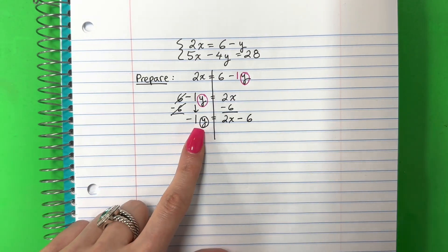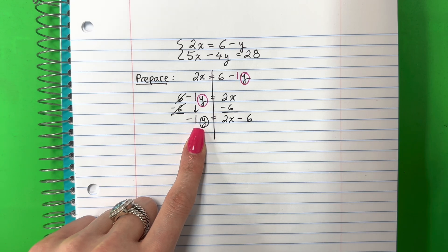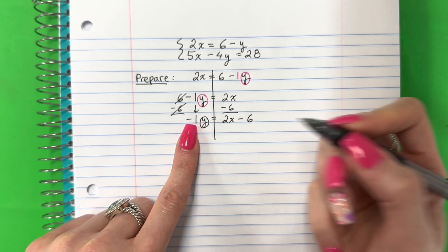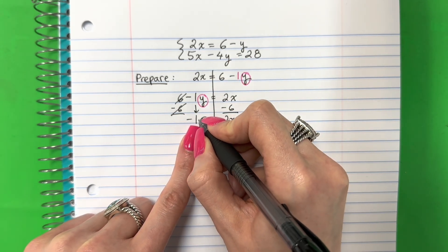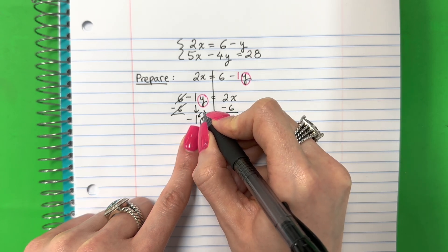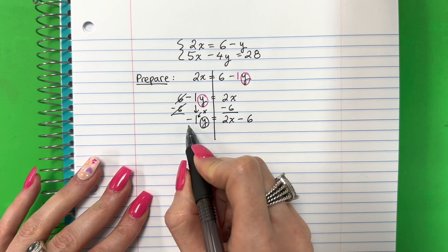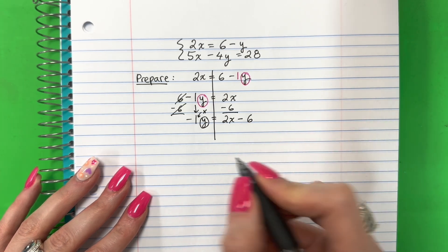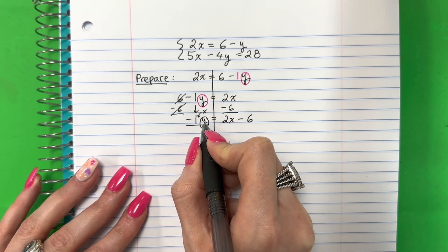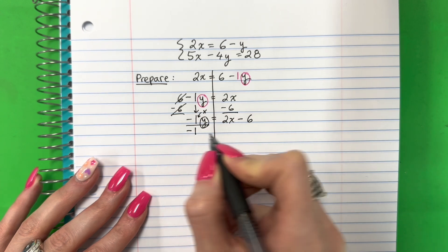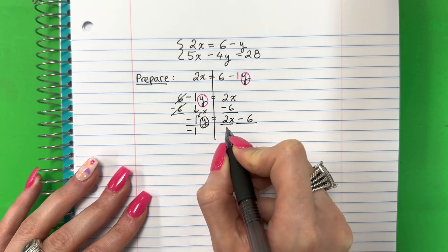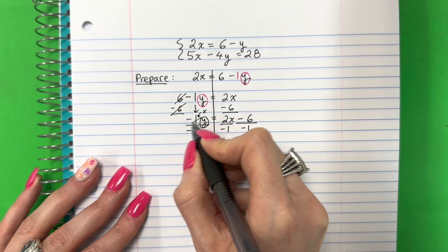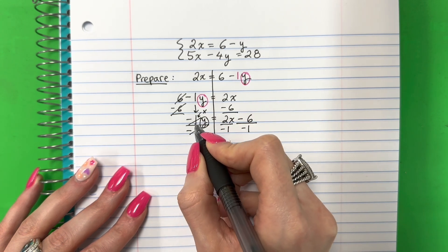6 minus 6, 0. Cancel. Copy. Negative 1y. Circle. Equals. 2x minus 6 are not like terms. Dos x menos 6. No son términos similares because they have different letters. Porque tienen letras diferentes. So copy. Entonces copy. I cannot add them. No puedo sumarlos. Now, is the Y alone? Ahora es la Y está sola. No, it's not. No, no. So the letter is with negative 1. La letra está con negative 1. Negativo 1. There's no sign in the middle. No hay signo en el medio. So that is multiply. Es multiplicación.